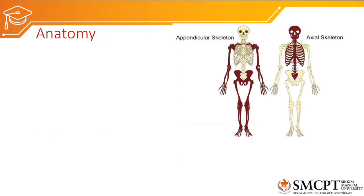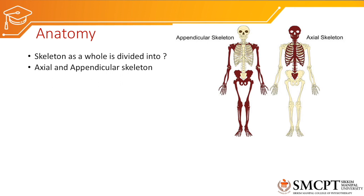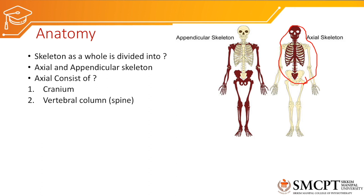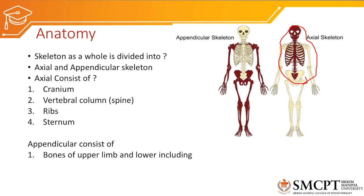First let us discuss the basic anatomy of the skeletal system. The skeletal system is divided into two segments: the axial skeleton and the appendicular skeleton. The axial skeleton consists of the cranium, vertebral column, ribs, and sternum. Whereas the appendicular skeleton consists of bones of the upper limb, the lower limb, clavicle, scapula, and the pelvis.